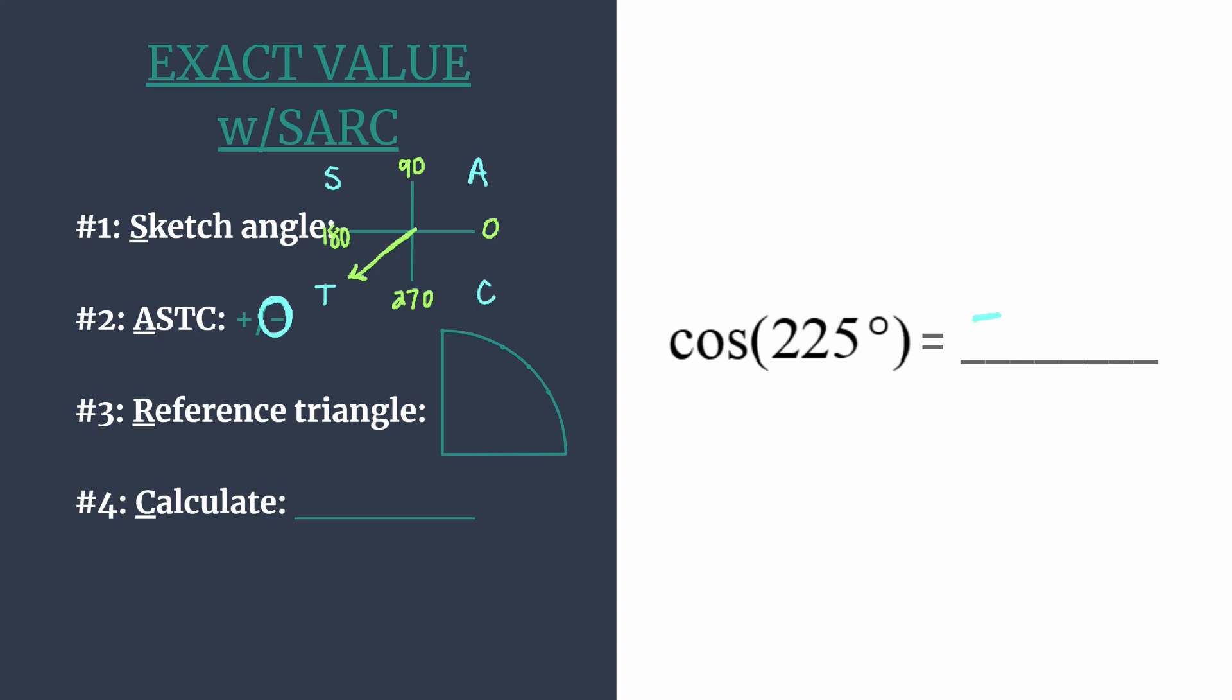Now we're ready for step three. We'll first find the reference angle. That's the amount of rotation from our terminal side to the x-axis. We know we rotated 225 degrees, so we just have to figure out how many degrees past 180 that is. Simply subtract 180 from 225, and we'll get our reference angle is 45 degrees.